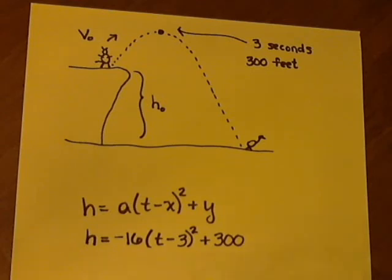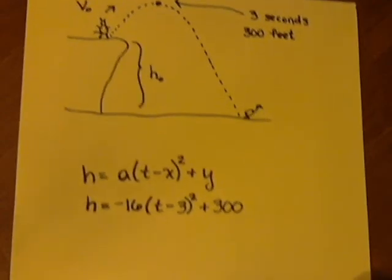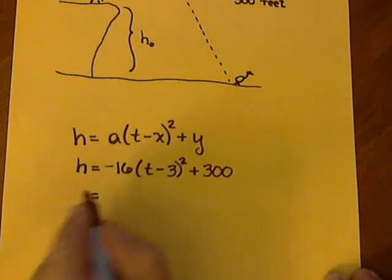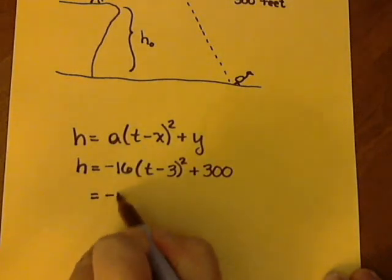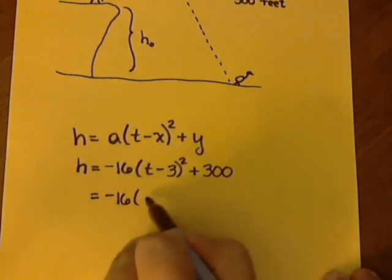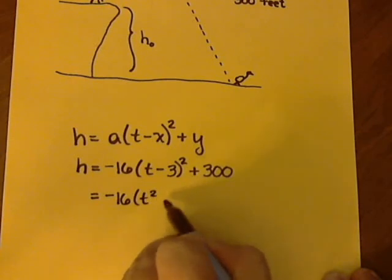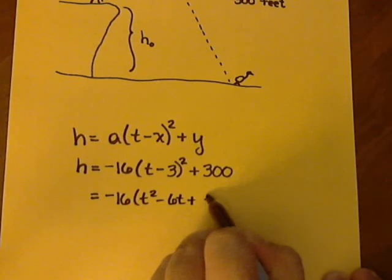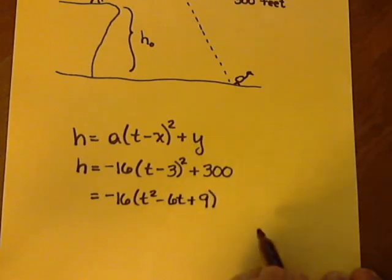And so now what we want to do is multiply this out and put it in the regular form for a falling object, and then we can look at it and identify the initial height and initial velocity. So let's FOIL out the T minus 3 squared. That'll give us T squared minus 6T plus 9, and then plus the 300.